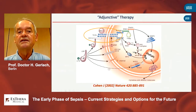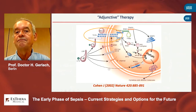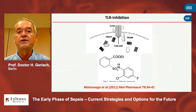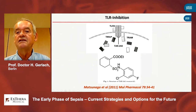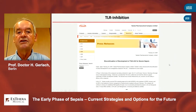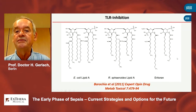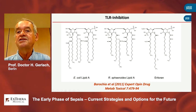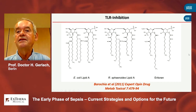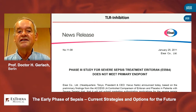Another approach targeted the Toll-like receptors. Two large trials were conducted: one with a blocking inhibitor TAC242, which had to be stopped due to futility. Similarly, a competitive inhibitor called eritoran — which mimics the lipid A fraction of endotoxin and blocks TLR4 — was studied in the so-called ACCESS trial, which also had to be stopped due to futility. No effect of this kind of treatment.